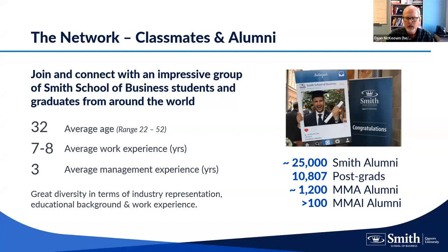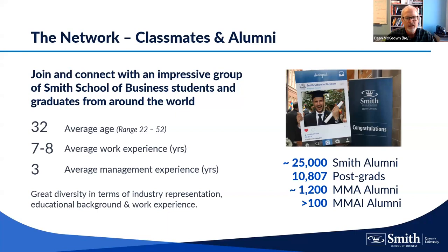What does your class look like? The MMA program average age is about 32, but the range of 22 to 52 is more interesting. The 22-year-old comes in with very strong technical and programming skills, while the 52-year-old brings extensive business experience and political acumen — knowing how to get things done inside an organization. Putting these people on teams together becomes very effective, as you learn from one another. Average work experience is seven to eight years, with three years of management experience.